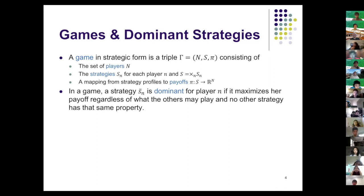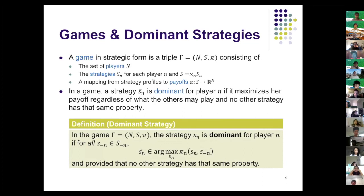In the second price auction, bidding truthfully is a dominant strategy — because no matter what everybody else does, if I bid 10, I get the best possible payoff: if the highest opposing bid is less than 10, I win and I'm happy; if it's greater than 10, I lose and I'm happy too. Formally, a strategy is dominant if, no matter what strategies everyone else plays, strategy s-bar-n is one of the arguments that maximizes the payoff for player n.